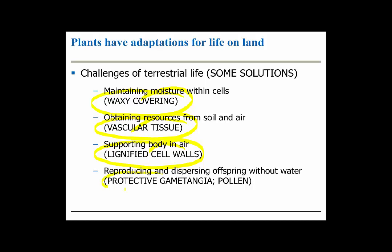And that's what the female gametangium, the archegonium, serves — it retains the egg and the zygote and even the embryo. And if you want to get rid of the need to be around water entirely, evolve seeds and pollen. Pollen is a transport vessel, a vehicle for sperm.